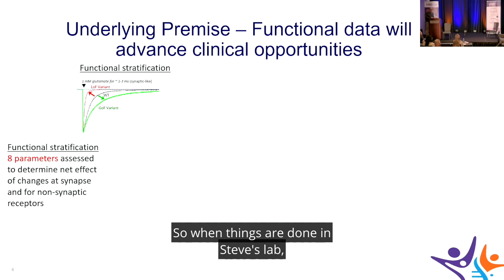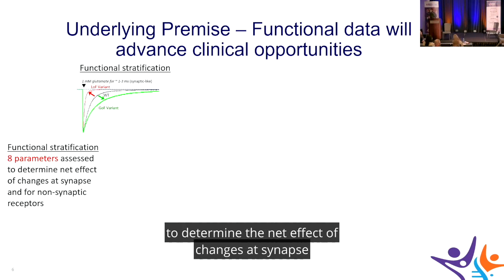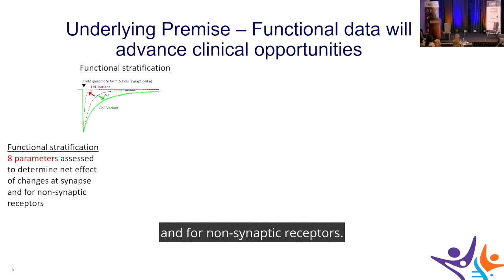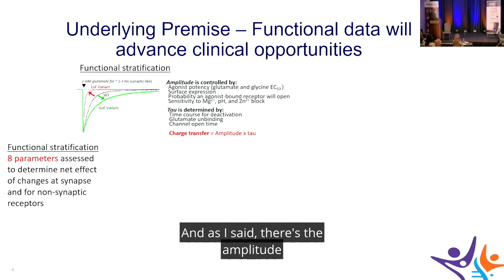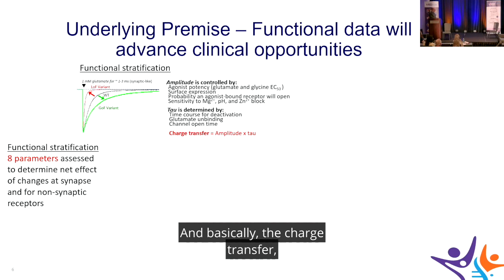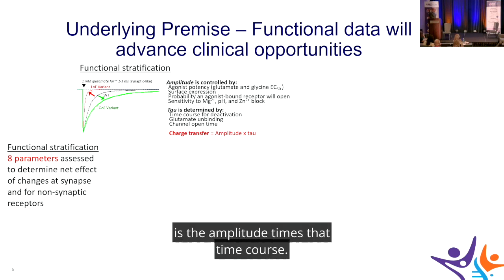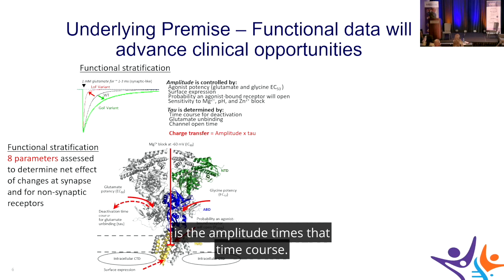In Steve's lab, eight parameters are assessed to determine the net effect of changes at the synapse for synaptic and non-synaptic receptors. There's the amplitude and the time course, and the charge transfer — which we think is most important — is the amplitude times that time course.